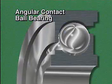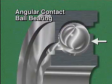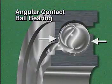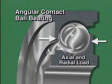Another type of ball bearing is an angular contact ball bearing. An angular contact ball bearing has a high shoulder on one side of the inner ring and a high shoulder on the opposite side of the outer ring. This design allows the bearing to handle both axial loads and radial loads.